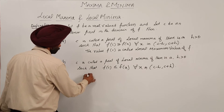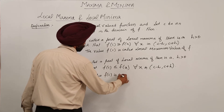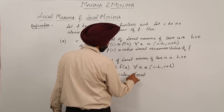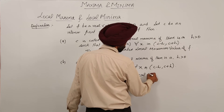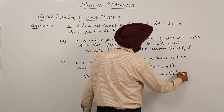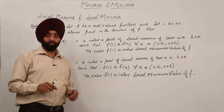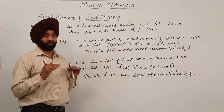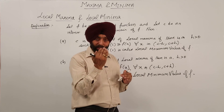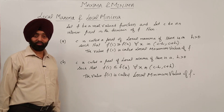The value f(c) is called the local minimum value of f. So we have a point c with h greater than 0 — a little bit less than c and more than c — giving us our local maxima and local minima.